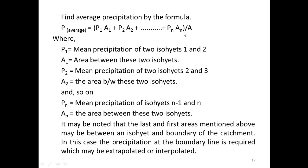Then find the average precipitation using the formula: P_avg = (P1·A1 + P2·A2 + ... + Pn·An) / A, where P1 is the mean precipitation between isohyets 1 and 2, A1 is the area between those two isohyets, P2 is the mean precipitation between isohyets 2 and 3, A2 is the area between them, and so on. The last and first areas may be between an isohyet and the boundary of the catchment, in which case boundary precipitation is extrapolated or interpolated.